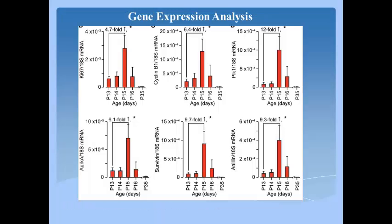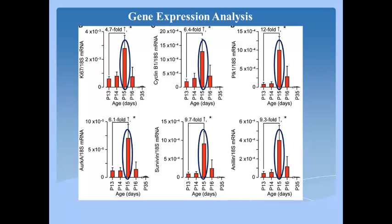To determine the time of onset of mitosis, authors measured the expression of several mitosis-promoting genes in cardiac ventricles daily from P13 to P16. They found 5 to 12-fold increases in mRNA levels of all these genes on the morning of P15, with levels on P15 evening falling to near P13 levels. Thus, cardiomyocytes are in M phase as early as 9 a.m. on P15.